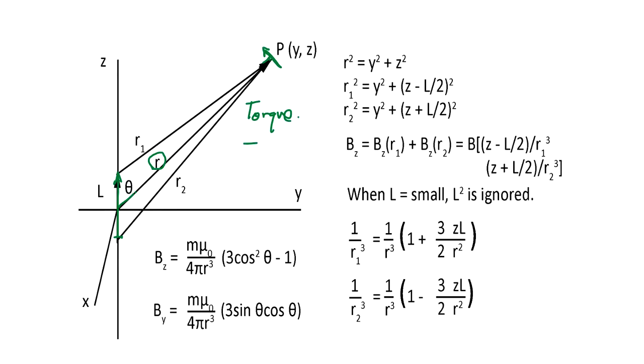Torque, a moment. Since there is a magnetic charge m plus here and negative here, there is a slight distance difference, so we go through this calculation. Suppose this is y and z. The magnetic field at this point: Bz is given by this, By is given by this.